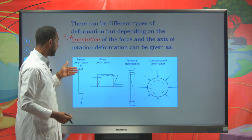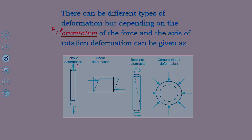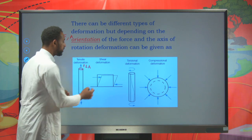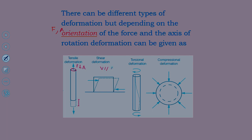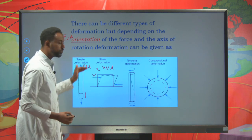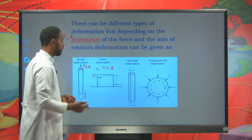The first type is tensile deformation, which leads to elongation in size. As you exert a force F onto a cross-sectional area A with a perpendicular orientation, there is an increment in length — this is known as tensile deformation. The second is shear deformation, which occurs due to shear force acting parallel to the cross-sectional area. While tensile deformation leads to elongation, shear deformation leads to bending of objects.